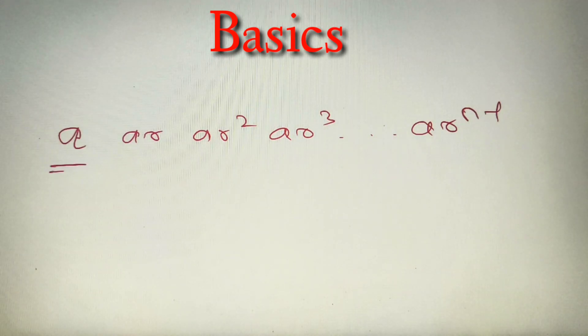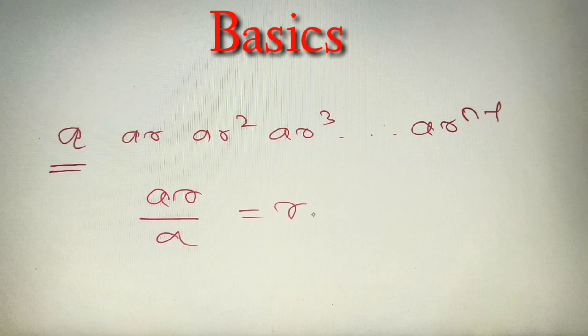So A will be the first term. AR divided by A gives the common ratio, which is equal to R, and n is the number of terms in the GP.